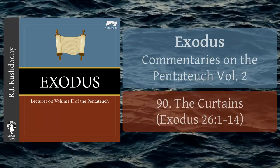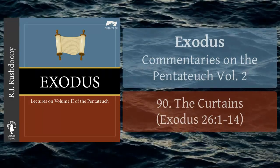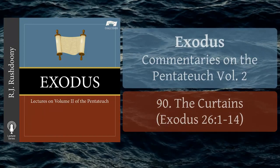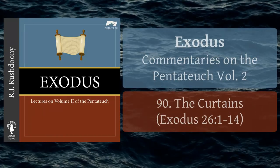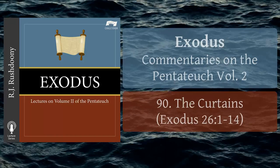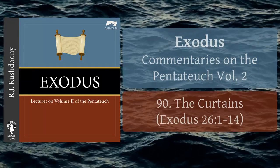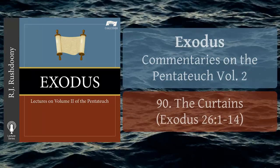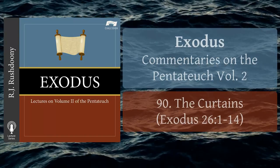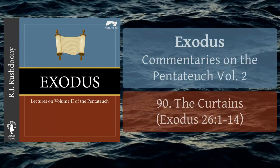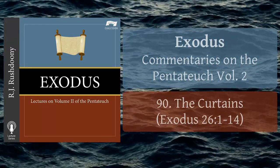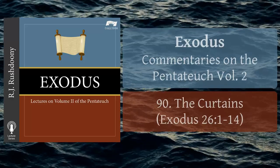Thou shalt make the tabernacle with ten curtains of fine twined linen, and blue, and purple, and scarlet, with cherubims of cunning work shalt thou make them. The length of one curtain shall be eight and twenty cubits, and the breadth of one curtain four cubits, and every one of the curtains shall have one measure.